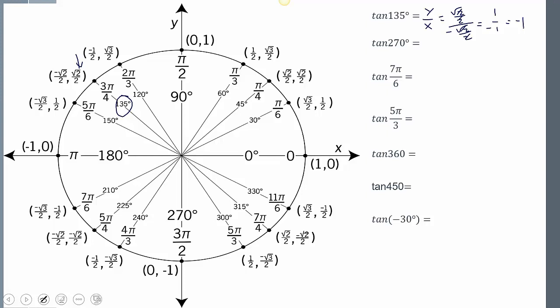Tangent of 270 degrees. So down here, remember, y over x, so negative 1 over 0. Well that's undefined.